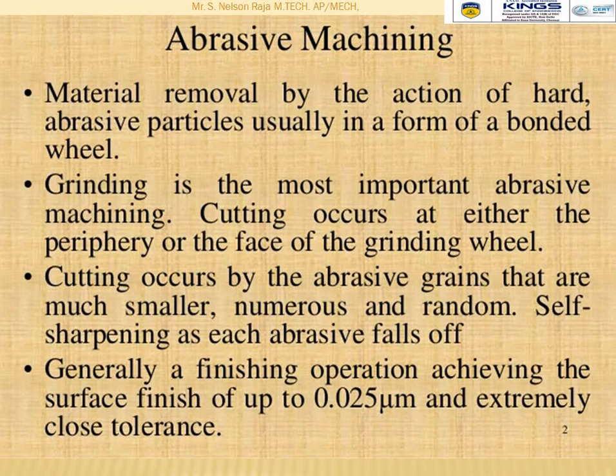Cutting occurs at either the periphery or the face of a grinding wheel. Cutting occurs by abrasive grains that are much smaller, numerous and random. The process is self-sharpening as each abrasive falls off. Generally it is a finishing operation achieving a surface finish up to 0.025 microns and extremely close tolerance — that is the speciality of abrasive machining.